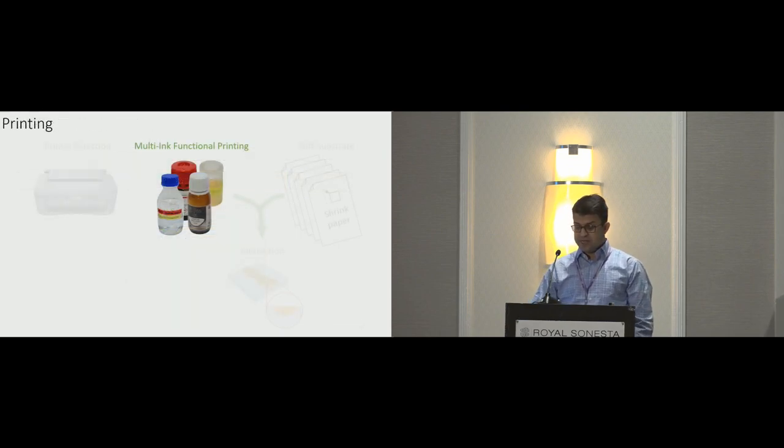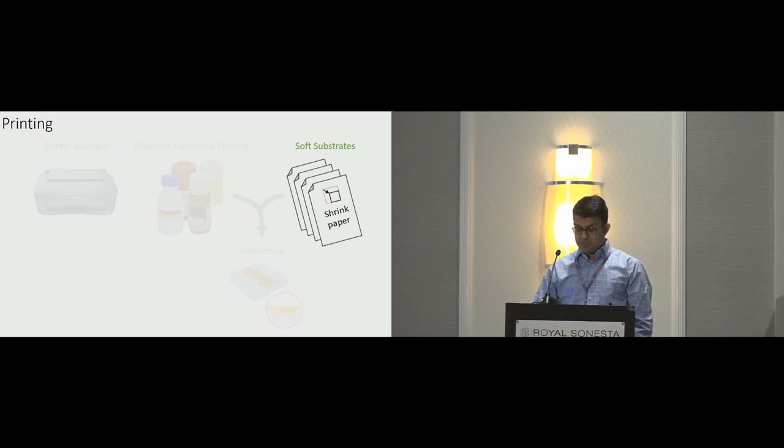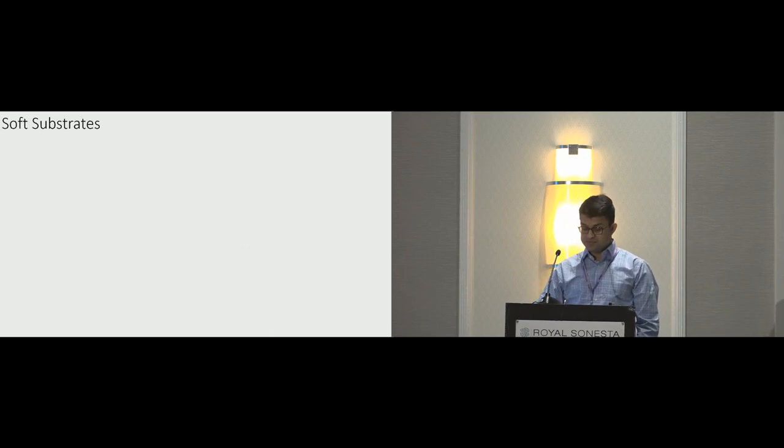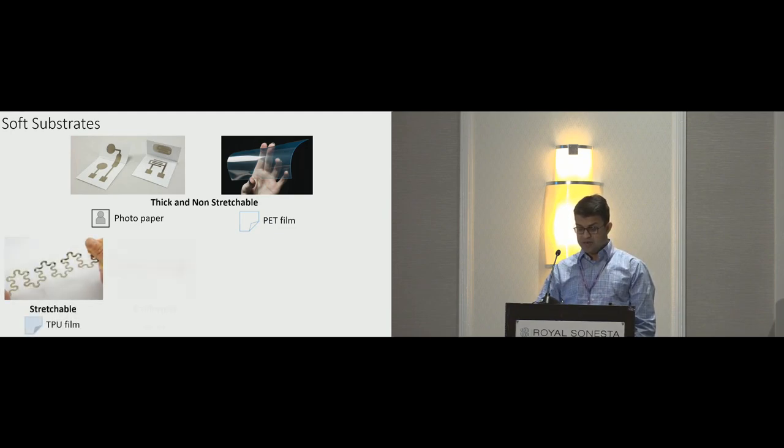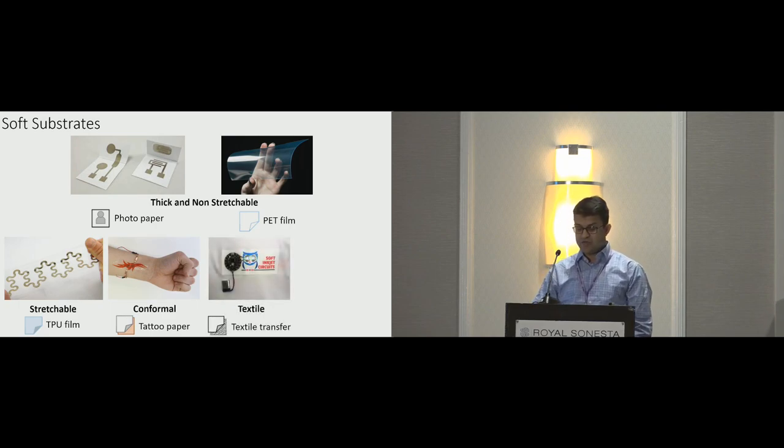Now that we systematically select the inks and combine them for multi-ink, multi-functional printing, let me talk about the soft substrate materials. One of our main contributions is that we extended the set of substrate materials from those predominantly used substrates, such as PET films and paper, to soft materials. We have explored a broad set of materials that exhibit the mechanical properties of soft substrates, such as they are stretchable, ultra-thin, compatible with textile, and reshapable. I will show some examples later.